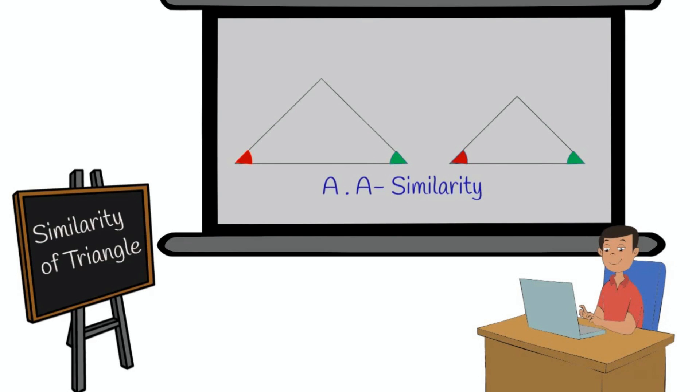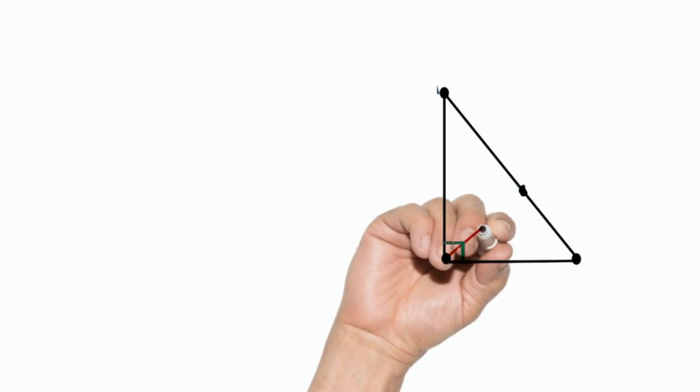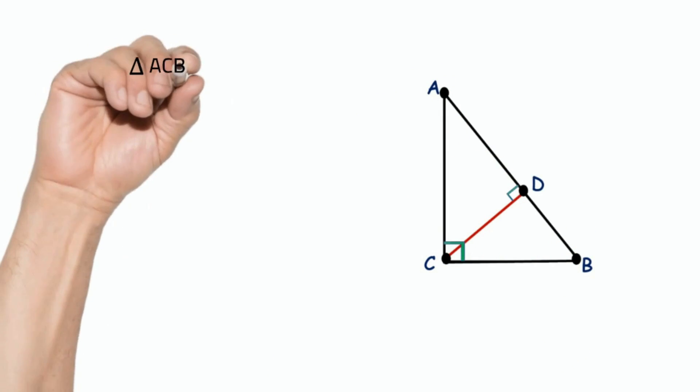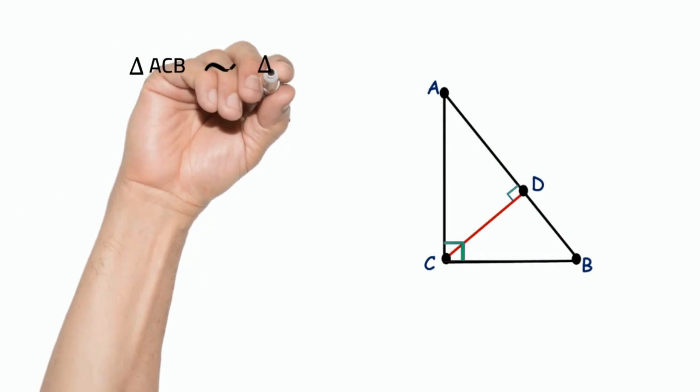When we consider two triangles, triangle ACB and triangle ACD are similar, because angle-angle similarity.